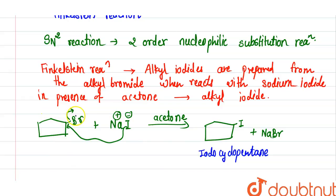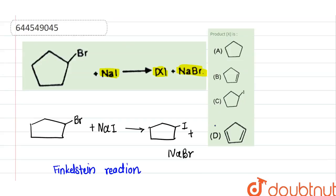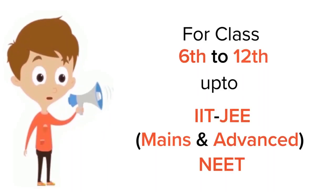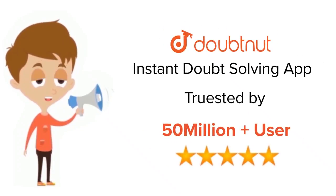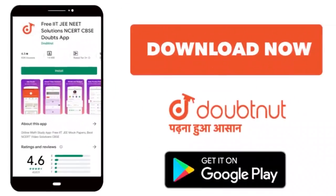So option number C is correct, that is iodocyclopentane. Thank you. For class 6 to 12, IIT and NEET level, trusted by more than 5 crore students. Download Doubtnut today.